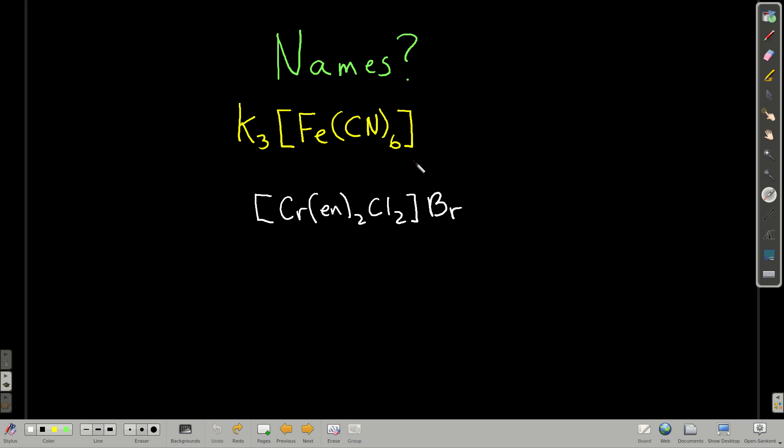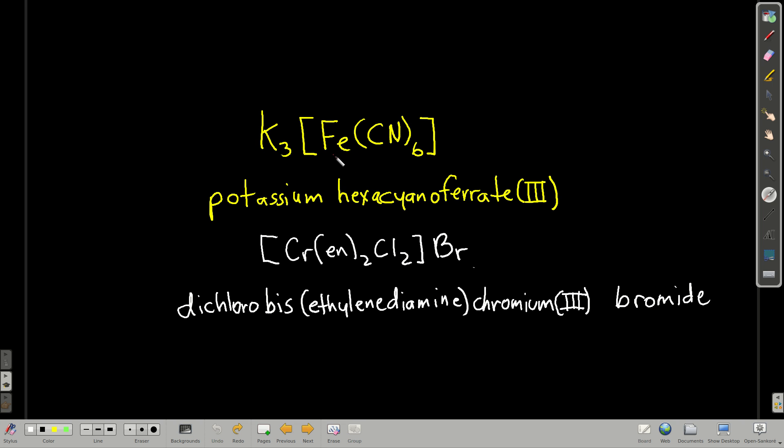So, let's try to apply this. Why don't you pause this for a minute and see if you can name these two compounds. This one is called, say the name of the cation first, it's potassium, potassium hexacyanoferrate(III), three because there are three positive charges from the potassiums, six negative charges from the cyanides, so there must be three positive charges on the iron.